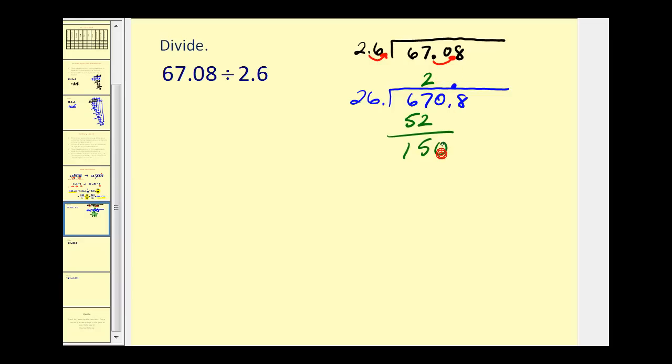We'll bring down the next digit. Now we want to determine how many 26's are in 150. Again we can think of this as 30. How many 30's in 150? That would be 5. Let's try 5. 5 times 6 is 30. We carry the 3. 5 times 2 is 10 plus 3. That would be 13. This is 20. Less than 26 so that 5 is correct.